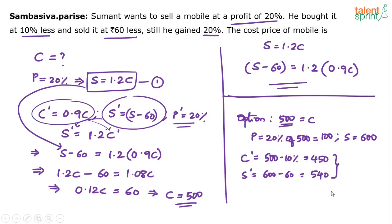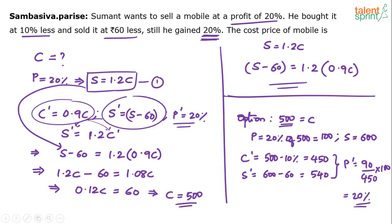This profit has to be 20%. The profit earned is 90 rupees (450 becomes 540). 90 rupees on a base of 450 rupees — and 90 is indeed 20% of 450. So we satisfied the condition that he still gained 20%. Therefore 500 is the correct answer. The cost price is 500 rupees.